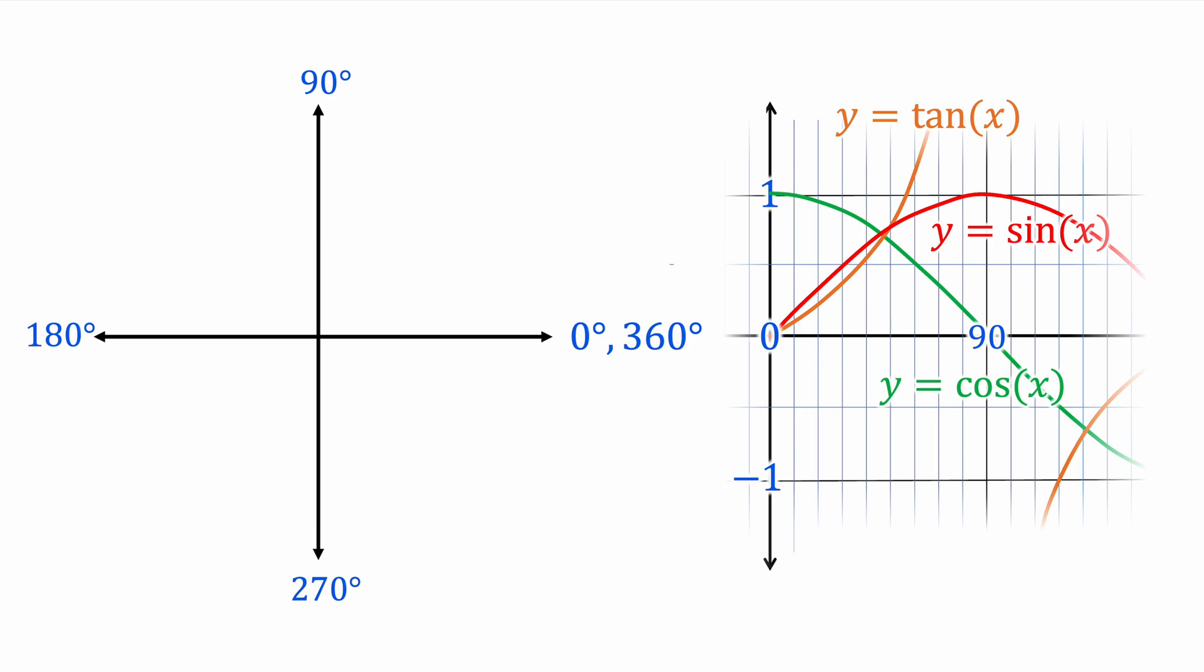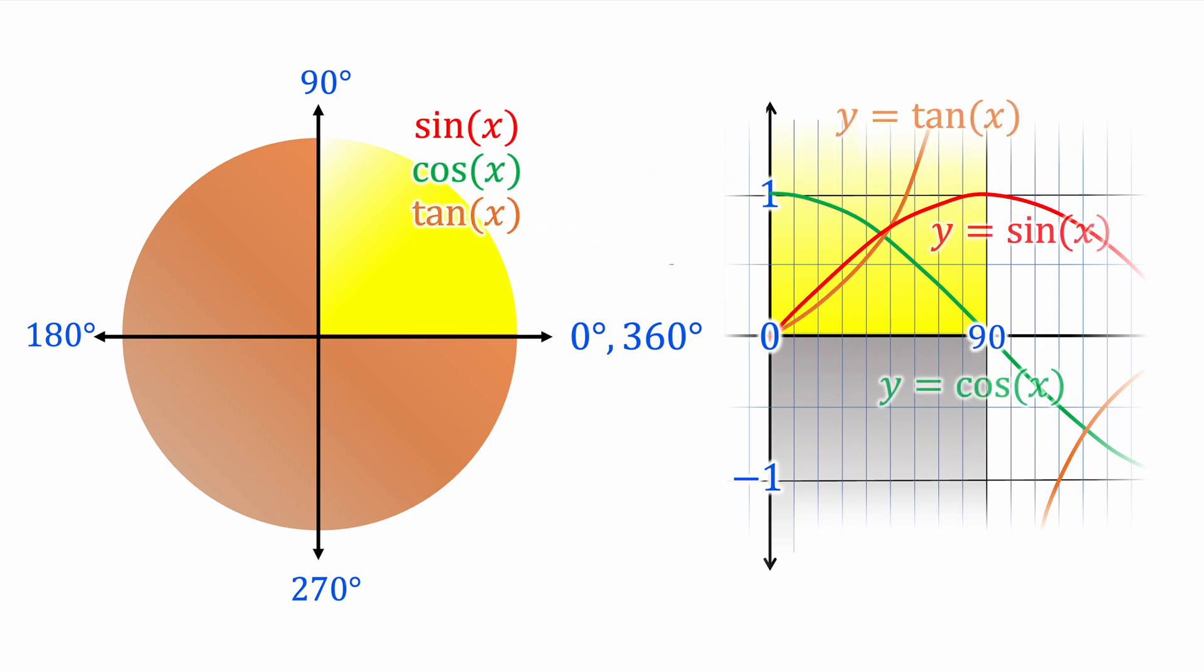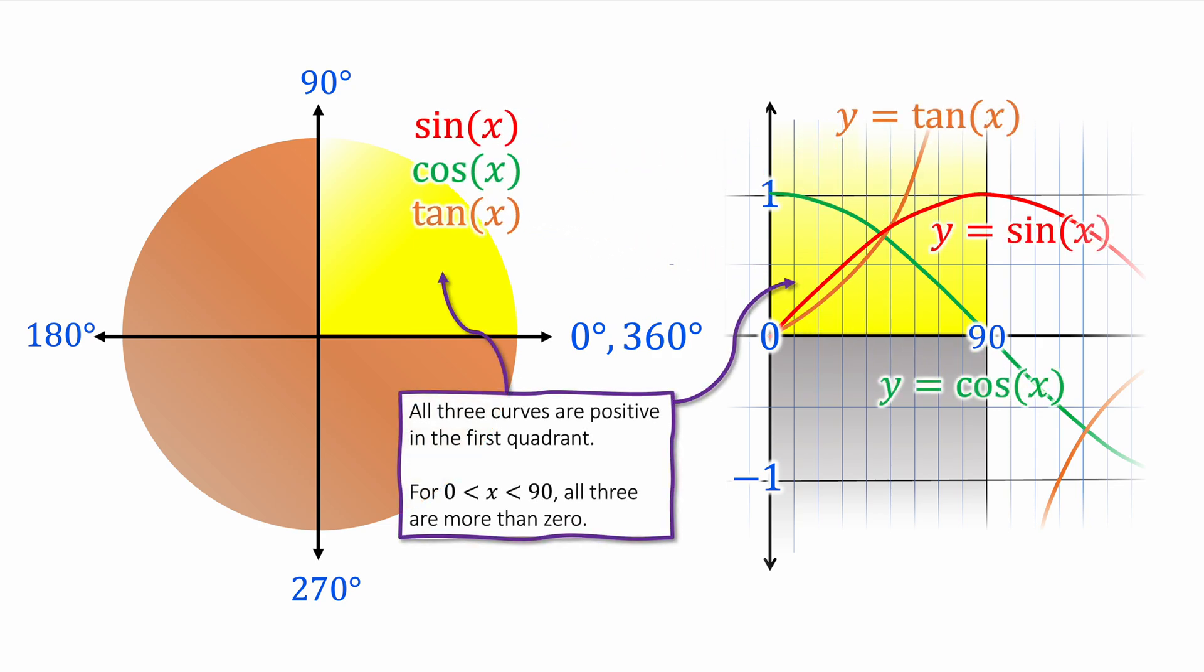We're going to see what the graphs look like in these regions. From 0 to 90, this first quadrant, all three graphs are above 0. They are all positive. So sin, cos, and tan are all positive above 0, between 0 and 90 degrees.